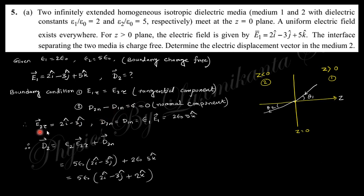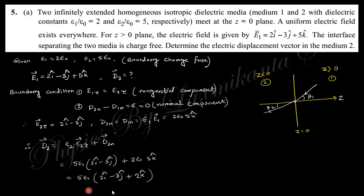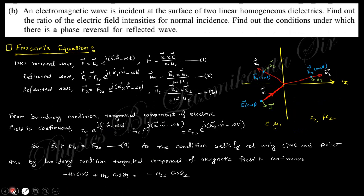The tangential component — here the perpendicular is z-cap and the tangential component is the i-j component, which is continuous. For the normal component, the displacement vectors are equal: D1n equals D2n, so epsilon_1 E_1 equals epsilon_2 E_2. With epsilon_2 equal to five and the known field components, D2 is obtained as epsilon_2 times the result — so D2 is fully determined.